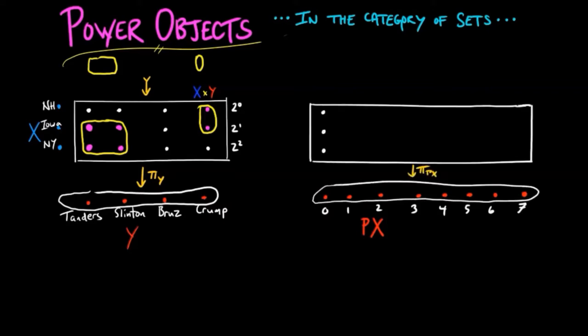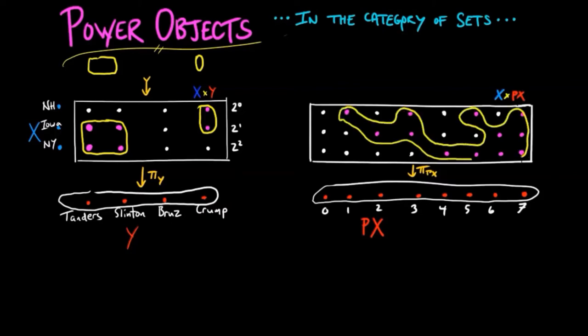The membership relation describes a subset of the product of X and the power set of X. For example, since the binary number corresponding to 3 is 0, 1, 1, the fiber over 3 has the elements corresponding to the 1's digit and the 2's digit in the subset described by the membership relation.